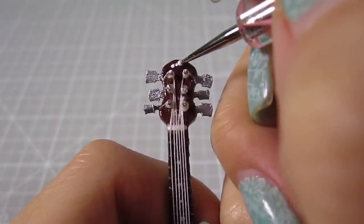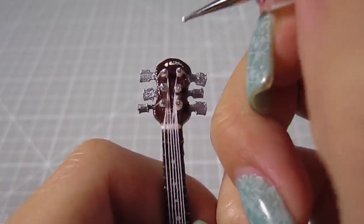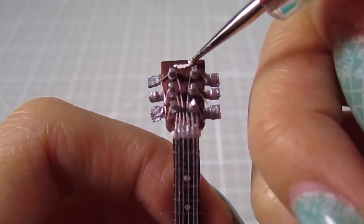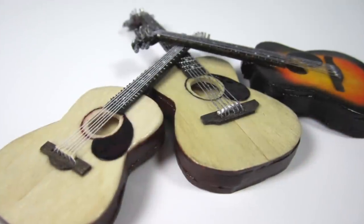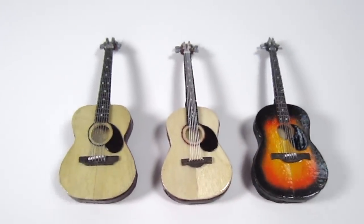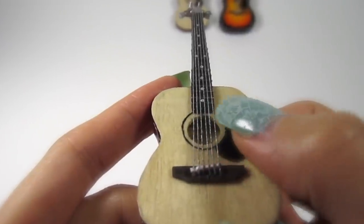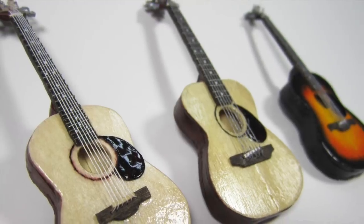Okay, last detail. I just add a line of white paint across the top of the head. Not necessary, but I really like that extra detail. That's it guys. The guitars are all finished. They're so tiny and adorable. I hope you guys liked this video. Give it a thumbs up if you did and make sure to subscribe for more. I have two new videos every single week. I'll see you next time. Bye!